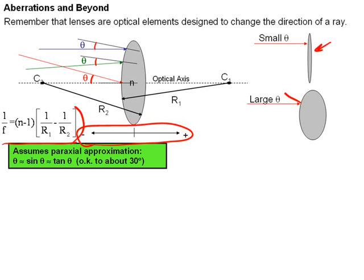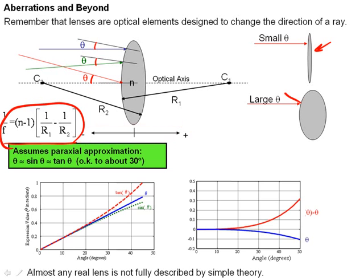And this lens maker's equation essentially assumes the paraxial approximation that theta equals sine of theta equals tangent of theta, which we know is okay, as we see in the graphs below, out to about 30 degrees.